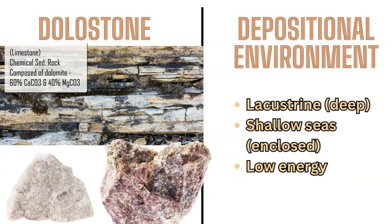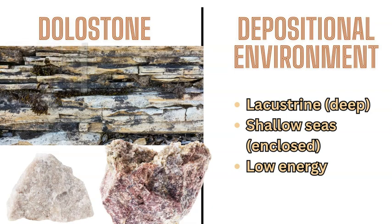Dolostone is very similar to limestone — a similar family of rock — but has both calcium carbonate and magnesium carbonate as its composition. It forms in a similar way to limestone and in similar environments, including deep lakes and shallow seas with low energy.